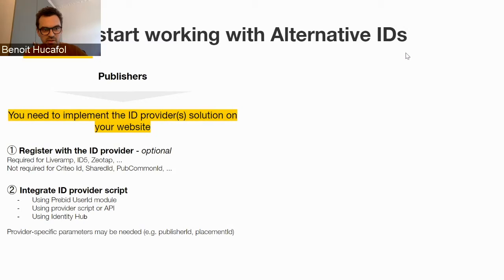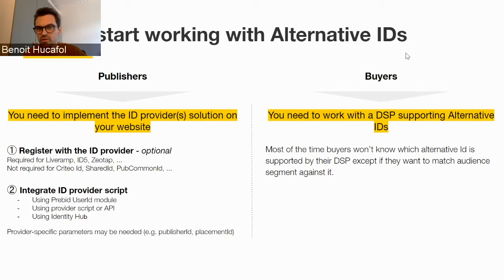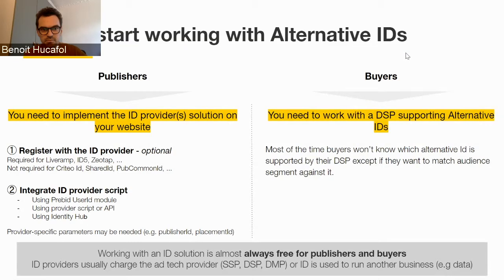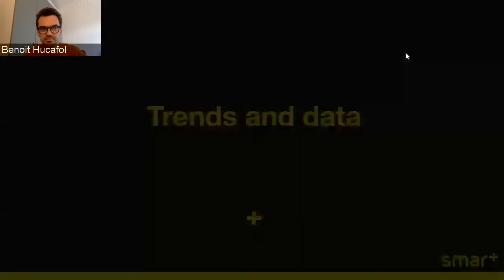On the demand side, you do not need to do anything to work with alternative IDs because the DSP will be in charge of integrating them — it will be transparent for buyers. Most of the time you won't know whether your DSP supports alternative IDs or uses different approaches to identify users. In terms of business model, alternative IDs are most of the time free for publishers and buyers. ID providers charge ad tech providers to use the alternative ID, or they use it to run another business, like a data business in the case of LiveRamp or Zeotap.